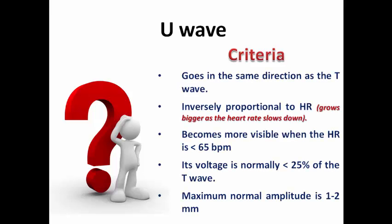What are the criteria for the U wave? Usually it goes in the same direction as the T wave — so if the T wave is positive the U wave could be positive, if the T wave is inverted the U wave could be inverted. It is inversely proportional to the heart rate, so it becomes bigger as the heart rate is slower and more visible when the heart rate is less than 65 per minute. Usually its voltage is less than a quarter of the T wave and its maximum amplitude is one to two millimeters.